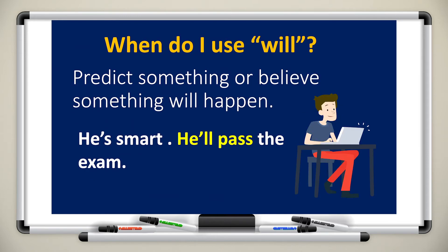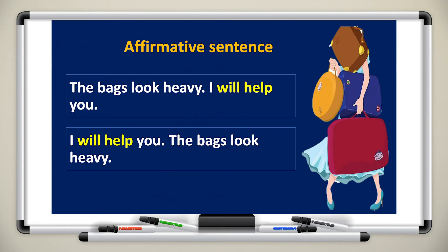When I want to use 'will' to predict something or express a belief, I say, for example, 'He is smart. He'll pass the exam.' Because I believe he is smart, I know he will pass the exam — that's why I used 'will', because I'm speaking about a belief or giving a prediction. Now, just like all tenses, there are three forms: the affirmative, negative, and the question form.